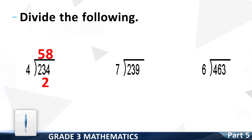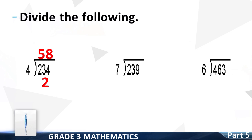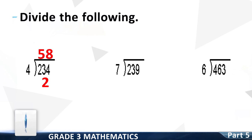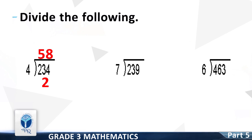Next question is 234 divided by 4. Good, the correct answer is: quotient 58, remainder 2.